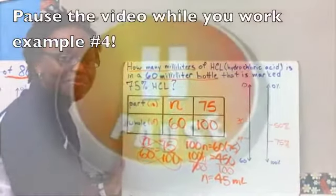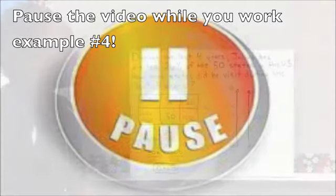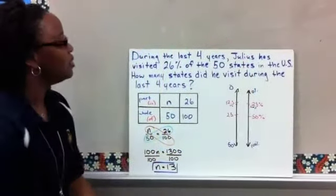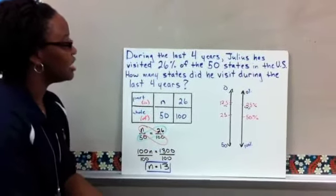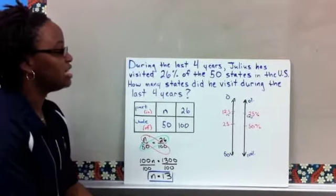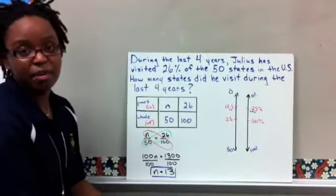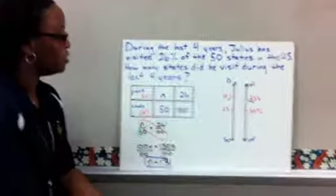Go ahead and try the next example on your own. Here's our last example. During the last four years, Julius has visited 26% of the 50 states in the U.S. How many states did he visit during the last four years? So let's break apart the problem, put together our percent proportion.